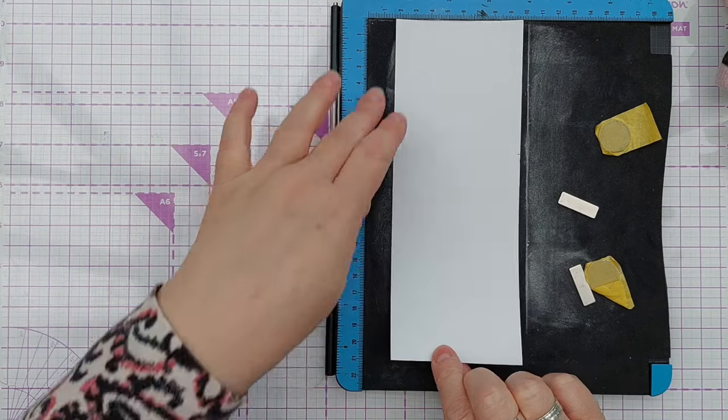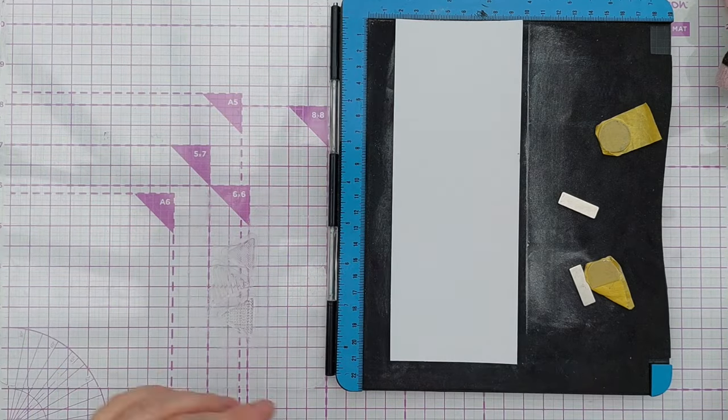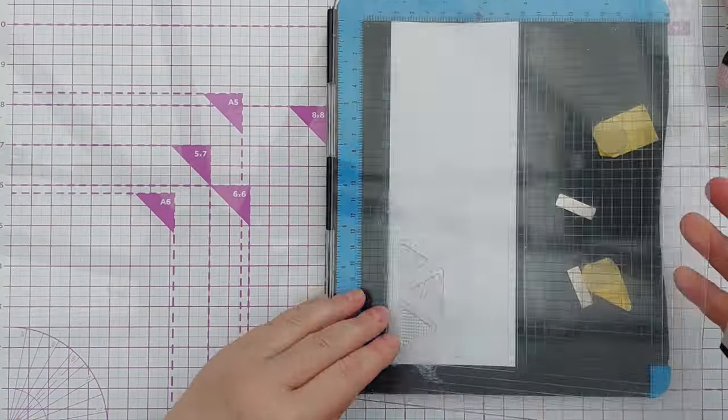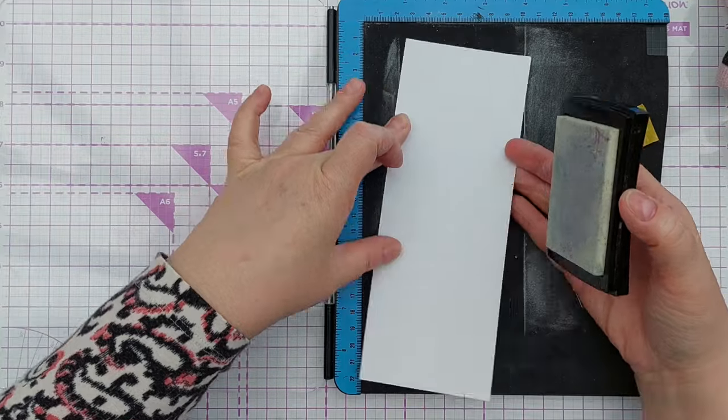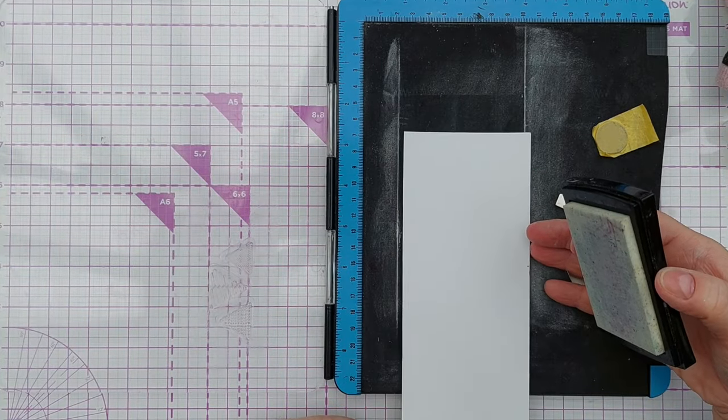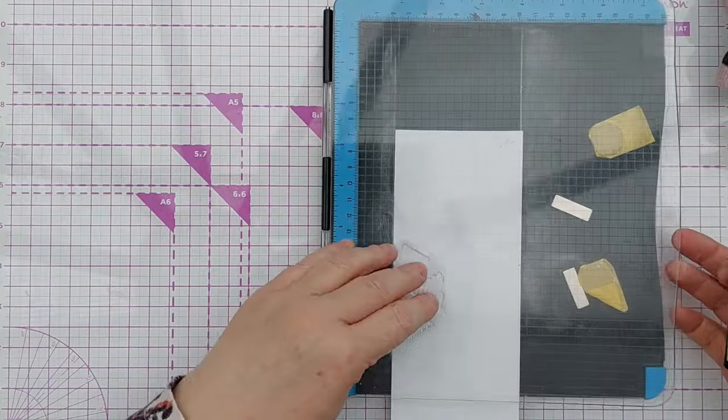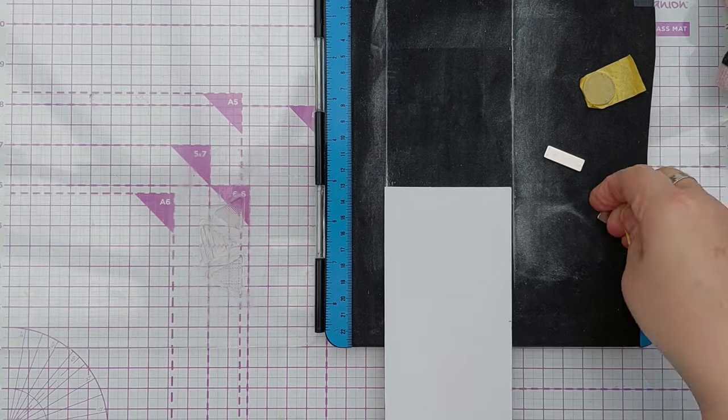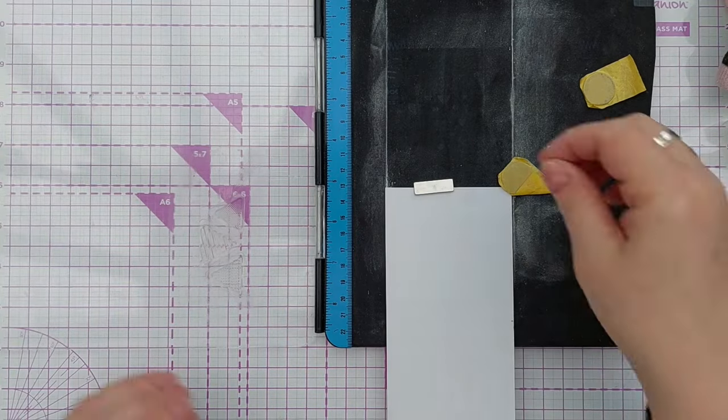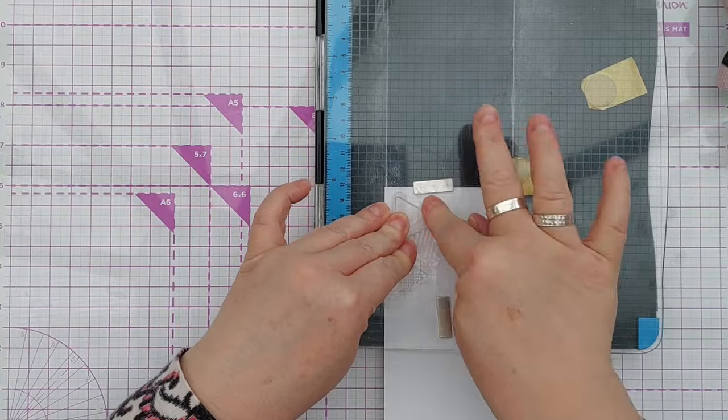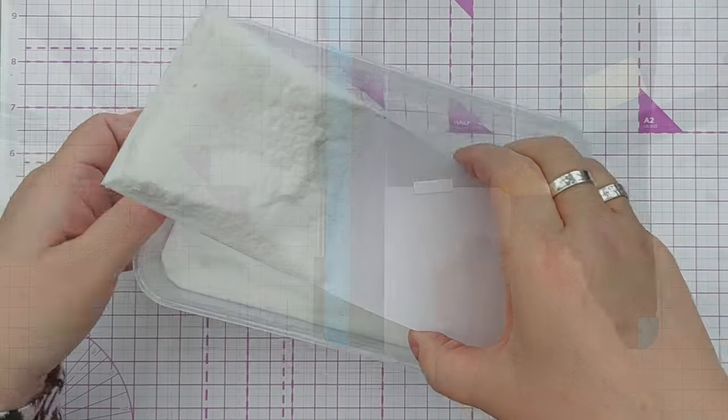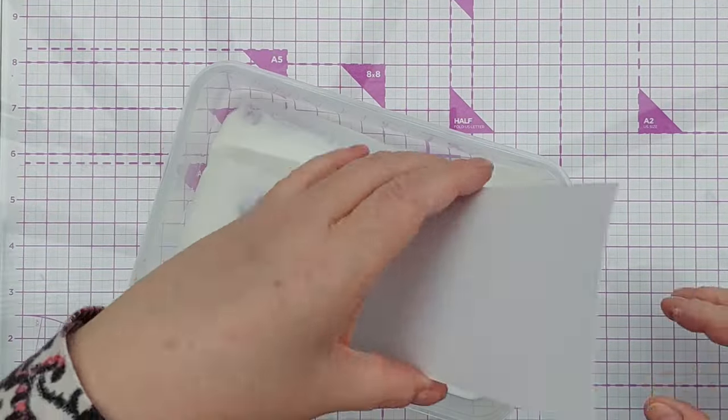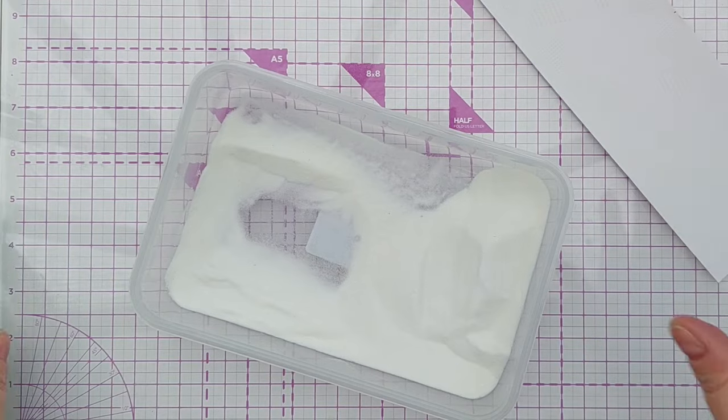I'll stamp my images in embossing ink. I'm going to swing that around and do the same down the other side. I'm dipping this in clear embossing powder and I shall heat that with my heat tool.